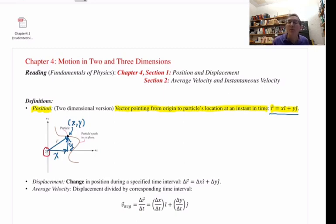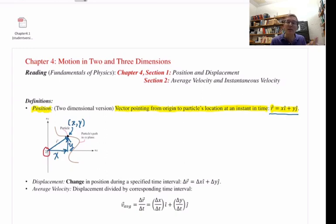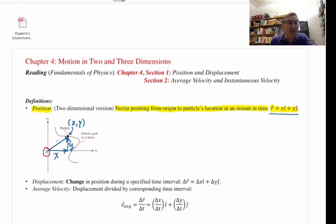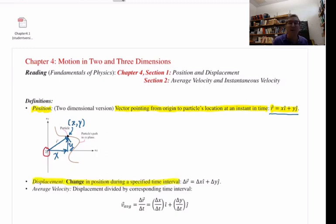To represent the position vector in unit vector notation, we write r-arrow equals x times i-hat plus y times j-hat, where x and y are the coordinates of the particle's position. These are all equivalent ways of denoting where the particle is. Now, if this is a squirrel, it's probably moving, so the position vector will change over time — and that brings us to displacement.